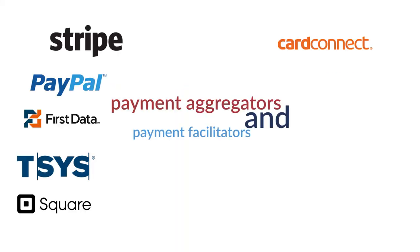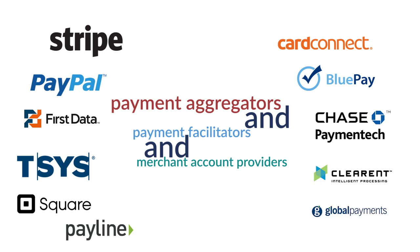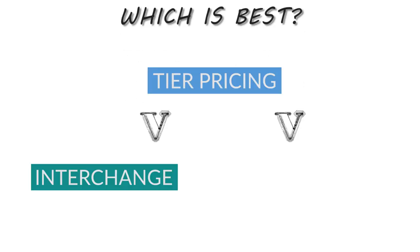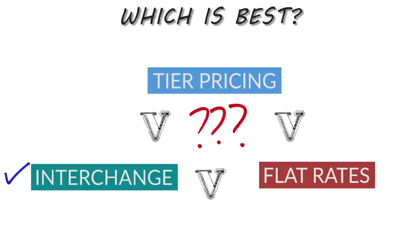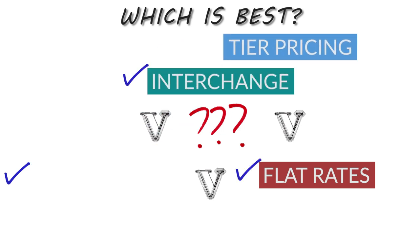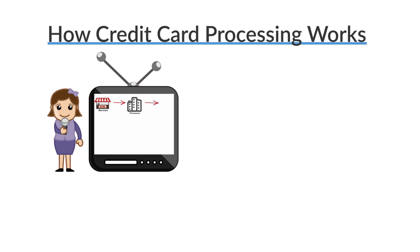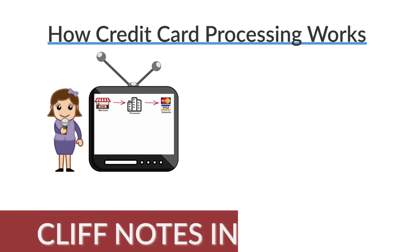There are always variations in pricing as more payment aggregators, facilitators, and merchant account providers enter the marketplace, so the competitive landscape will continue to adjust. The big question is: which pricing model is better? Let's look at interchange plus, tier, and flat rate programs side by side. I did a detailed comparison in my 'how credit card processing works' video, which I'll link at the end.